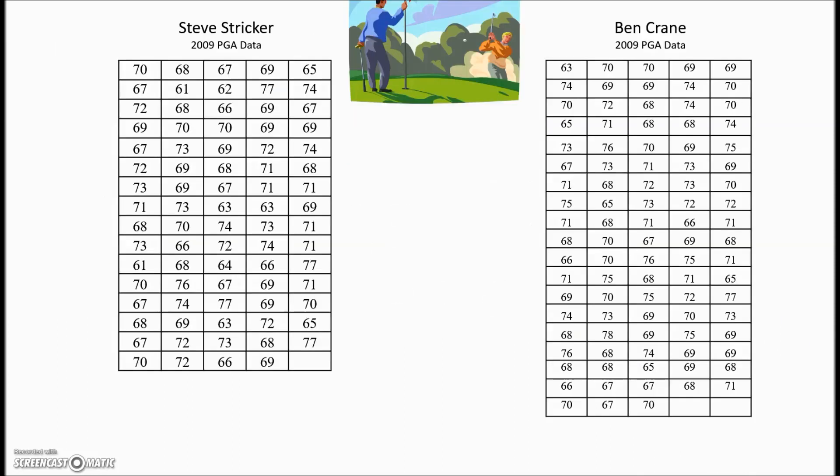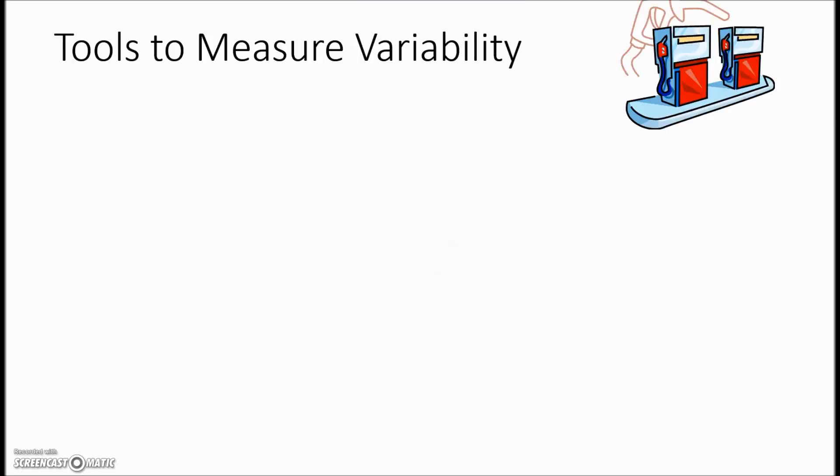If you were given these two score cards for these individuals and asked who is the more consistent golfer, because there's so many it's going to make it a much more difficult job. So we have some tools that help us with the measure of variability and the first one is range. It's a very simple calculation. It's a statistical measure of variability that we can use to quantify the amount of variability in a data set instead of just saying it's smaller or greater. We have an actual formula and it's found by taking the highest number in the data set minus the lowest number.